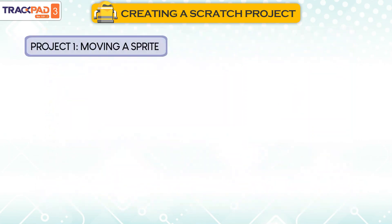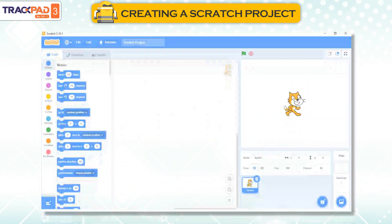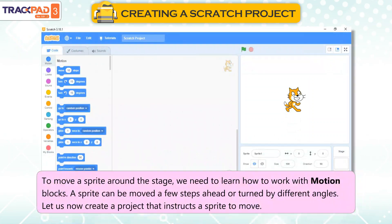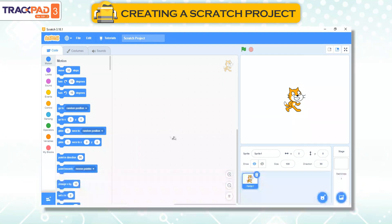Project 1: Moving a Sprite. To move a sprite around the stage, we need to learn how to work with motion blocks. A sprite can be moved a few steps ahead or turned by different angles. Let us now create a project that instructs a sprite to move.